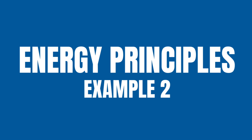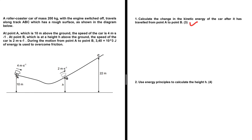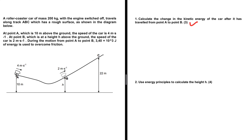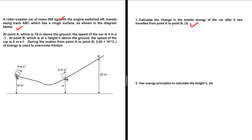Calculate the change in the kinetic energy of the car after it has traveled from point A to B. We have a roller coaster car of mass 200 kg with the engine switched off. It travels along track ABC which has a rough surface. As soon as we hear that it has a rough surface, we know that we can't use the conservation of mechanical energy — well, technically we can, but I advise not to.